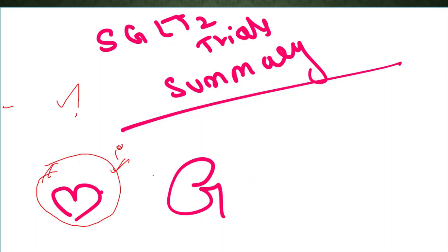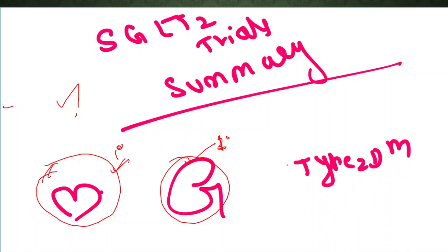There are also trials which focus primarily on the kidney, where the primary outcome involves renal parameters — such as eGFR fall or the patient progressing to end-stage renal disease requiring dialysis. These are the primary renal outcome trials. Since SGLT2 inhibitor drugs like dapagliflozin were primarily introduced for diabetes, it was later found they are useful in non-diabetic patients as well.